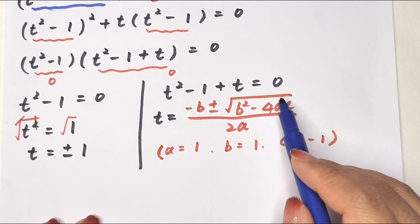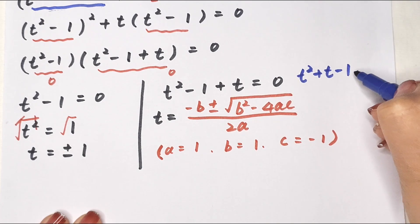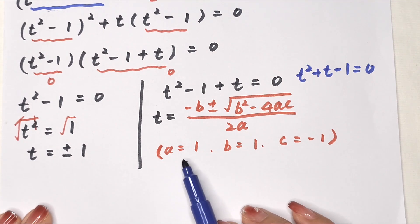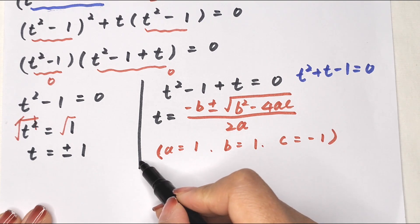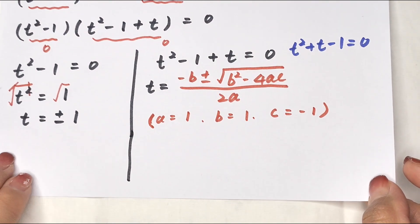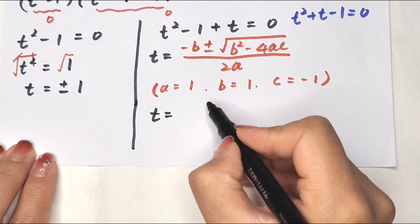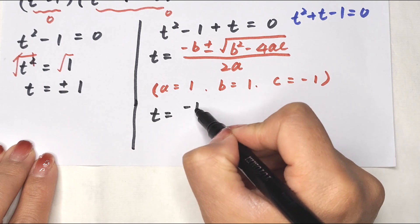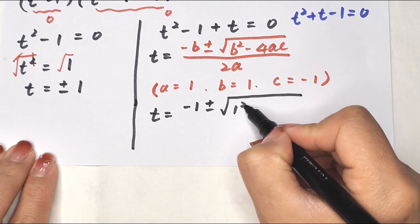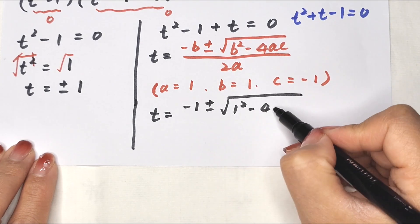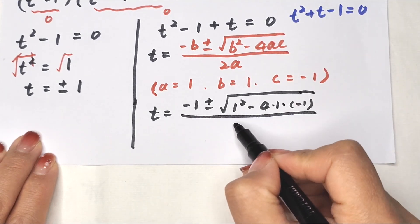The equation t squared plus t minus 1 equals 0 has a equals 1, b equals 1, and c equals negative 1. So t equals negative 1 plus or minus square root of 1 squared minus 4 times 1 times negative 1, all divided by 2 times 1.